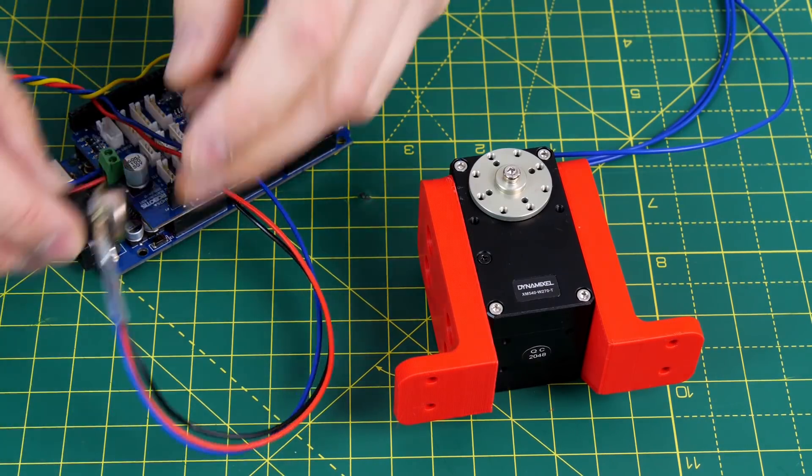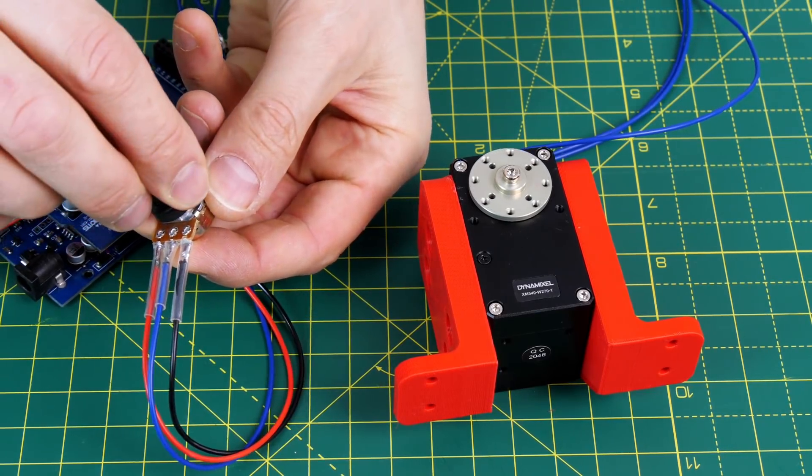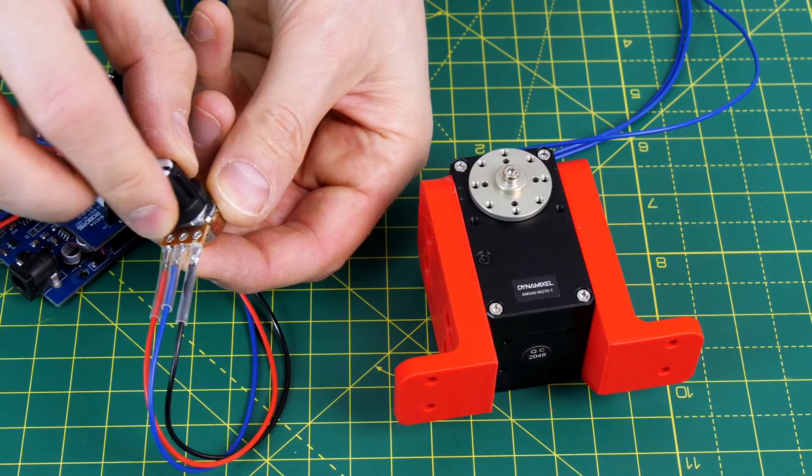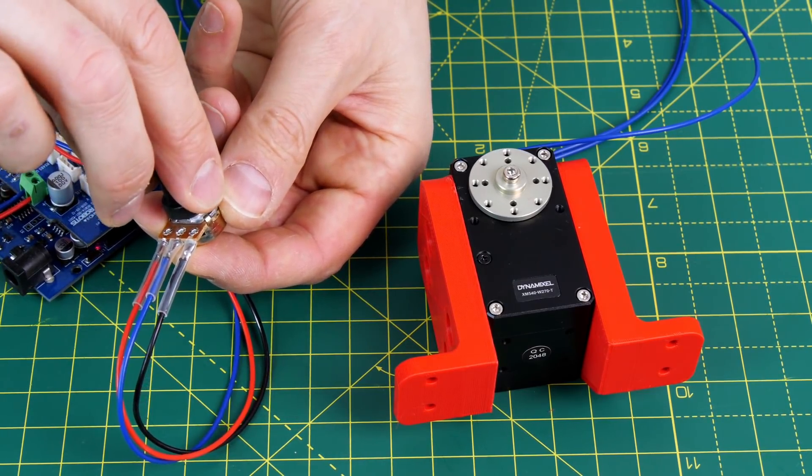I'm using the Dynamixel shield for Arduino, and so far I've just connected a pot so I can turn the knob and turn the servo and tilt the gyro and see what the effect is on my boat hull.